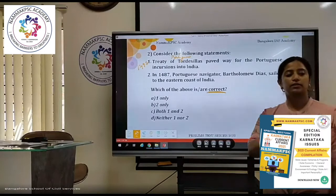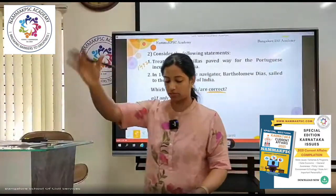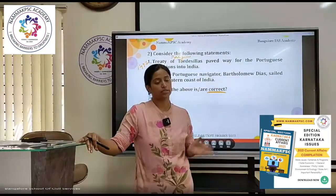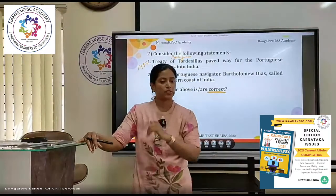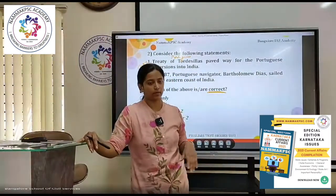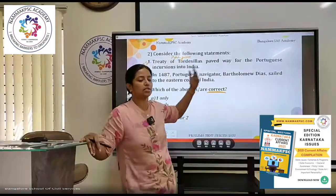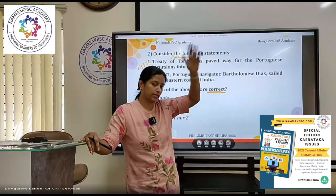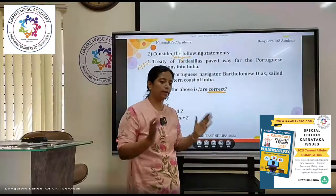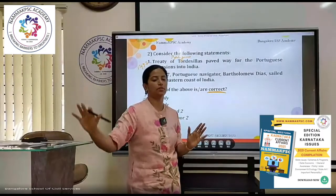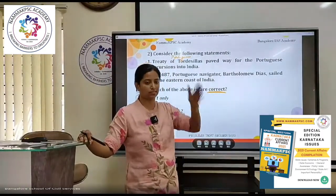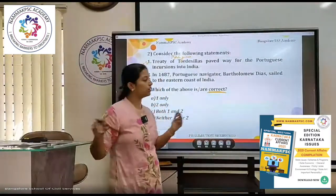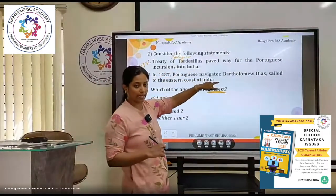Portuguese and Spain are rivals in their home continent. To avoid rivalry, they draw a boundary as to where each will explore. This is the treaty that gave the Portuguese a direction to go eastwards, and that's how they could come to India. The next statement: in 1487, Portuguese navigator Bartolomeo Diaz sailed to the eastern coast of India. He comes from the Cape of Good Hope from Africa down south. Western coast will be well guarded; later Vasco da Gama comes. But firstly, it was eastern India which was explored by the Europeans.